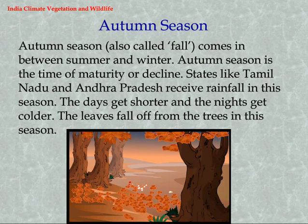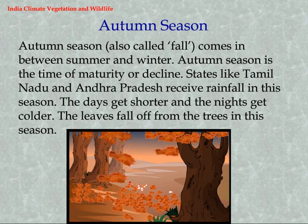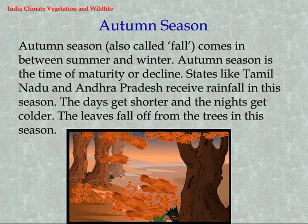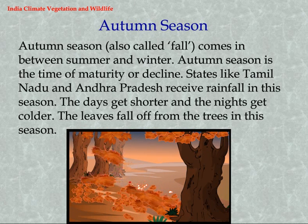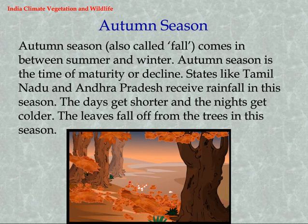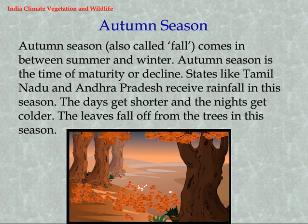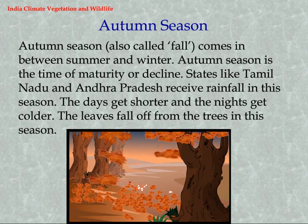Autumn Season: Autumn, also called fall, comes in between summer and winter. It is the time of maturity or decline. States like Tamil Nadu and Andhra Pradesh receive rainfall in this season. The days get shorter and the nights get colder, and the leaves fall off from the trees.